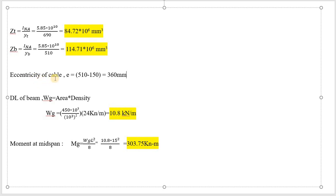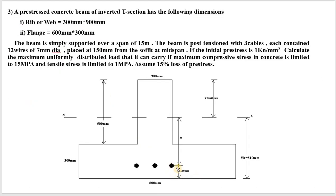Eccentricity of cable: e = YB − distance of cable from soffit = 510 − 150 = 360 mm. The cable is placed 150 mm from the bottom (soffit), and the neutral axis is at 510 mm from the bottom, so the eccentricity from the centroid to the cable center is 360 mm.